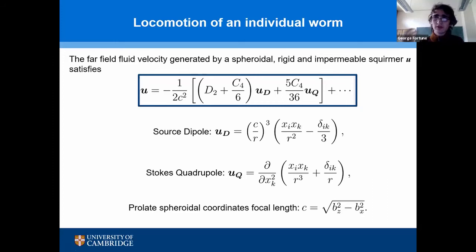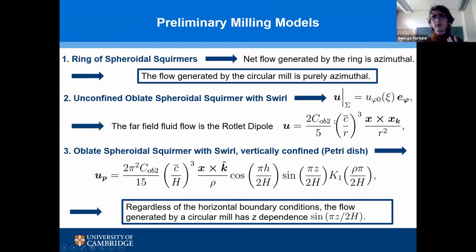Using these results we can begin modelling a circular mill. One approach is to consider a circular mill as a superposition of many hoops of worms, within each hoop the worms travelling in a circular contour line from head to toe. From the results of the previous analysis, the fluid velocity field induced by an individual hoop is a toroidal flow, and hence the total fluid velocity field produced by the circular mill — the superposition of many hoops — is also toroidal.